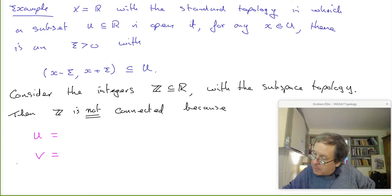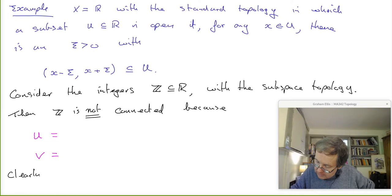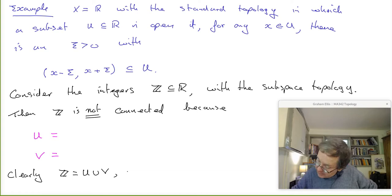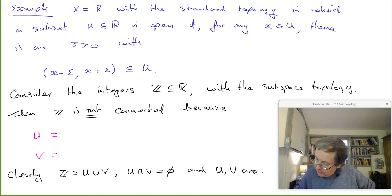Clearly the integers equal U union V, where U and V are open in Z, their intersection is empty, and neither U nor V is the empty set. Can anybody suggest two such open sets?